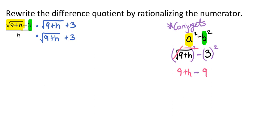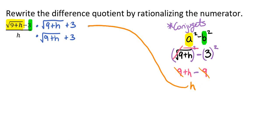So now we're going to simplify this, and this is going to give us what we're going to write down. When we simplify 9 plus h minus 9, we actually end up with just h, because 9 minus 9 is 0. So this is what we're going to rewrite up here in our numerator.